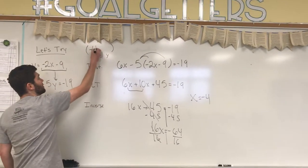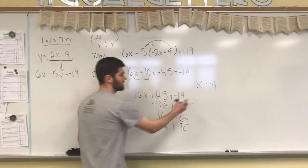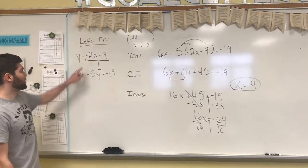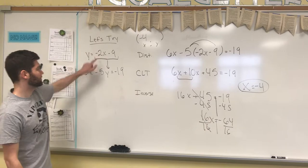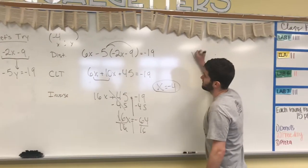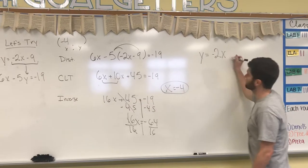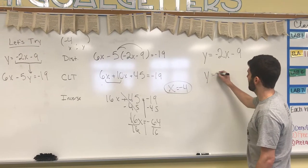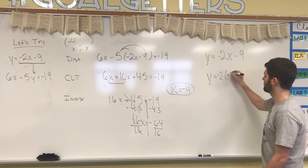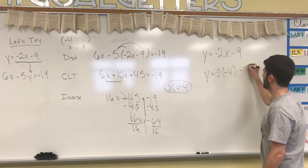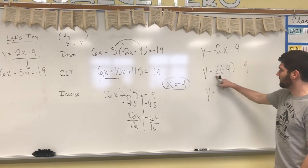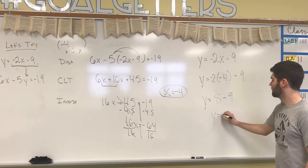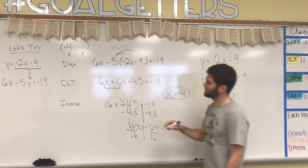I can go back up here to my answer and put a negative 4. Once I find this solution, I can go and plug it back into either equation. This equation is obviously much shorter, so I'm going to plug it in here. I have y equals negative 2x minus 9, and my x equals negative 4. So y equals negative 2 times negative 4, which is 8, minus 9. y equals negative 1. Once I know that, I can plug it back into my solution.